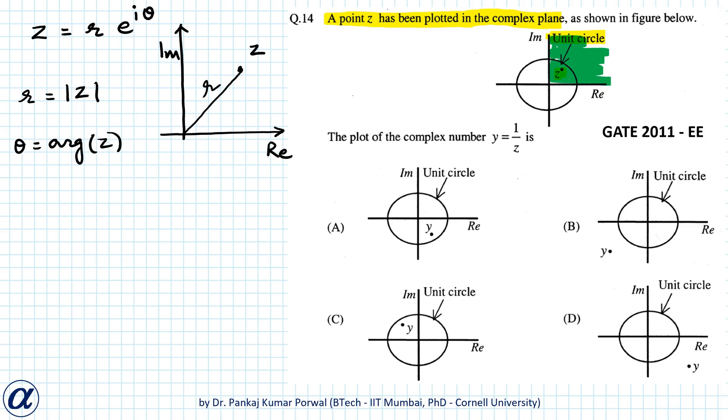Now, because our point z lies inside the unit circle, r equals modulus of z will be less than one, and theta will belong to the first quadrant.